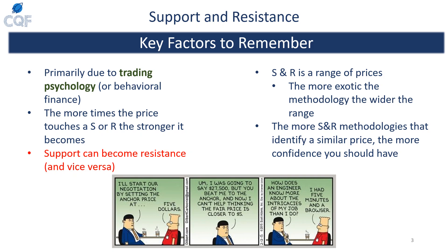Generally, the more times the price hits a support or resistance, the stronger it becomes because of that trading psychology. It's also very important to recognize that if a support gets broken, it might actually switch into a resistance. Additionally, support and resistance is not just a simple price — it's a range of prices, so keep that in mind.